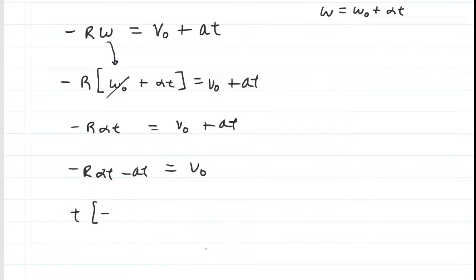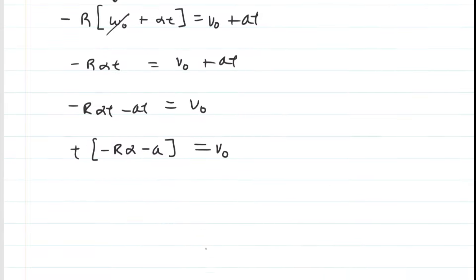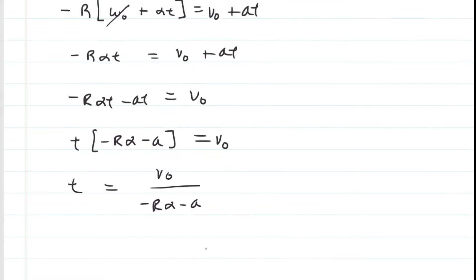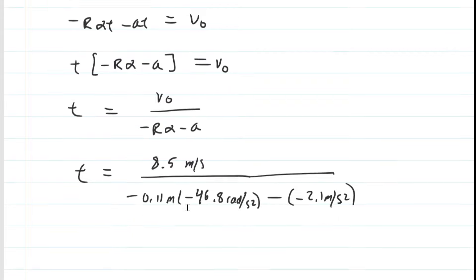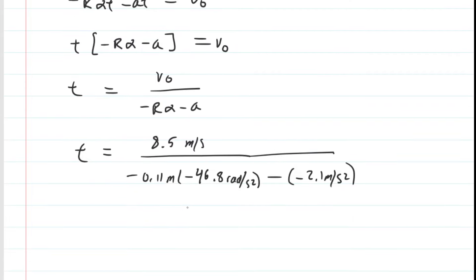we factor out t on the left-hand side, giving us t times the quantity negative r alpha minus a, then divide both sides by that bracketed term. Plugging in the known values along with the radius, we get a time of approximately 1.2 seconds. That is the correct answer to part D.